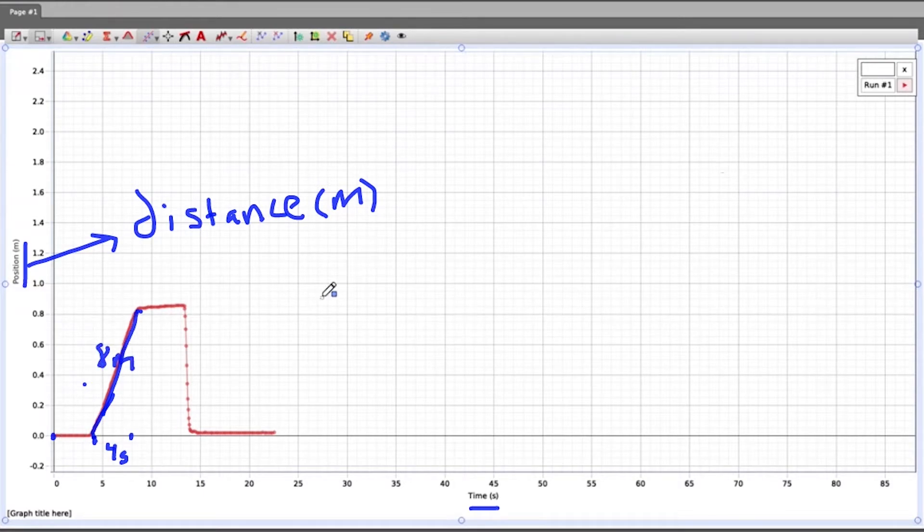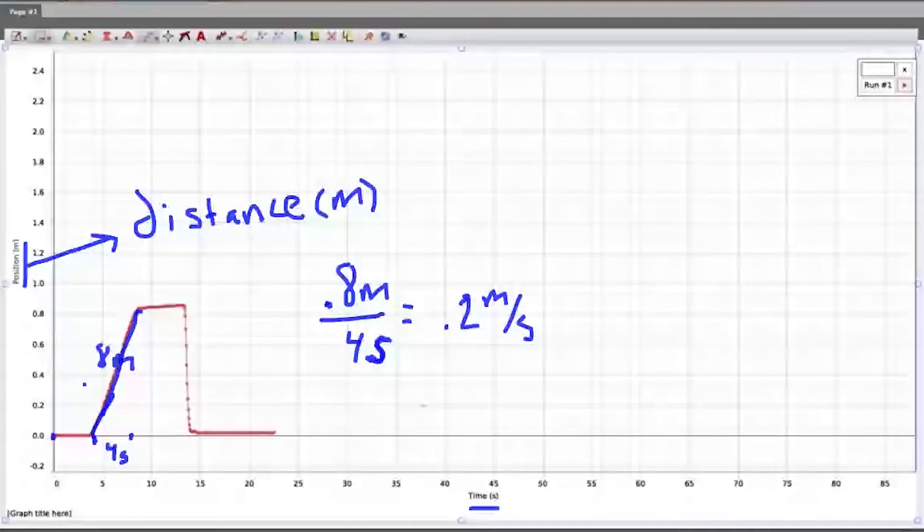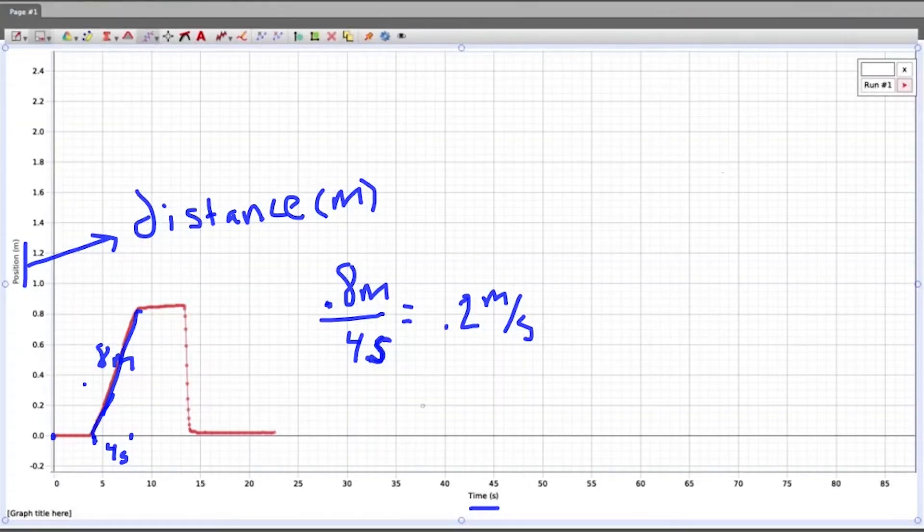So if I came over here and I said the rate of change was 0.8 meters every four seconds, we would end up getting 0.2 meters per second. So that's the rate of change of this graph. What that tells you is that cart was moving away from its starting point at 0.2 meters every second.